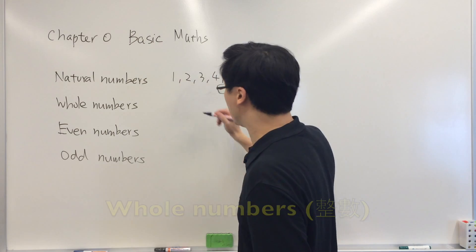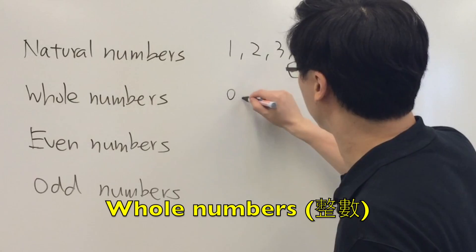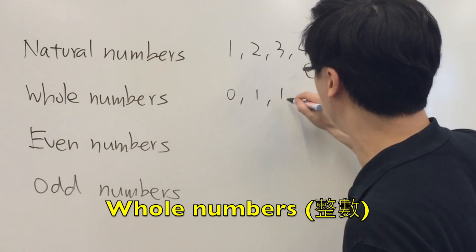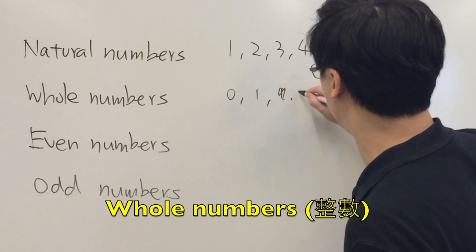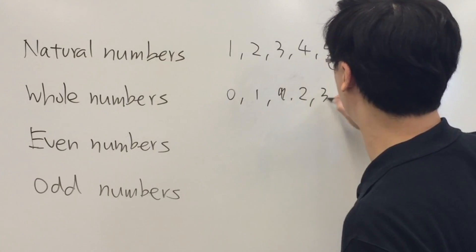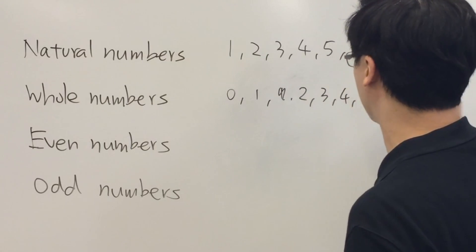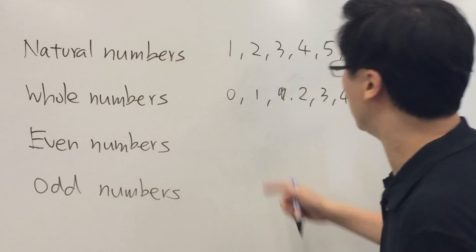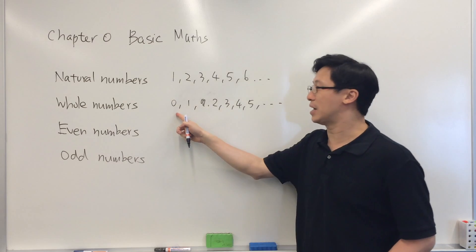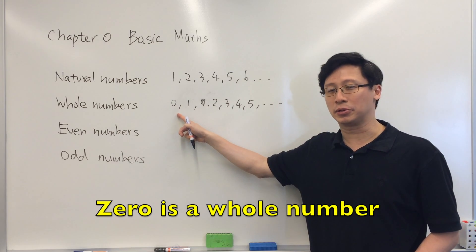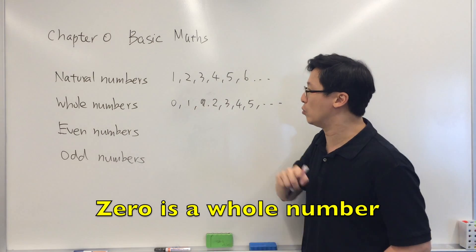For whole numbers, this will be 0, 1, 2, 3, 4, 5 and so on. Note that the number 0 is included as a whole number.